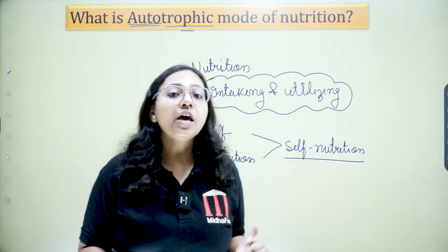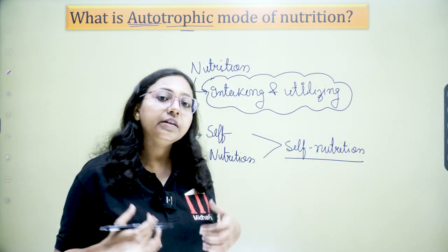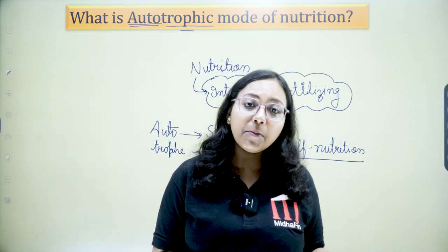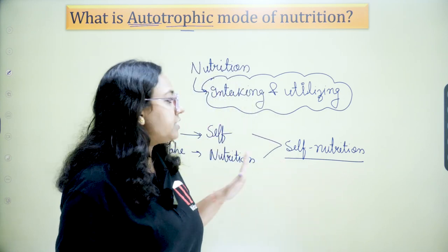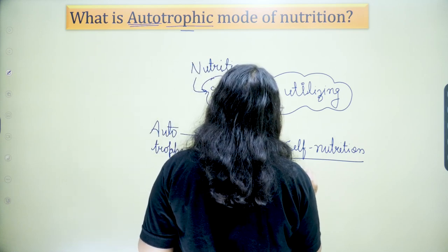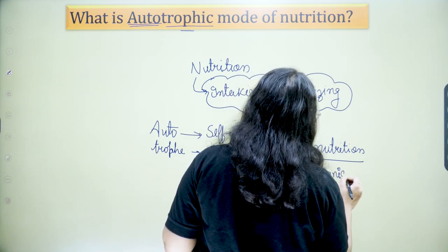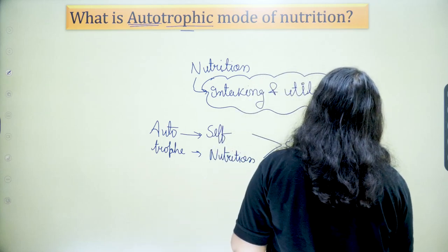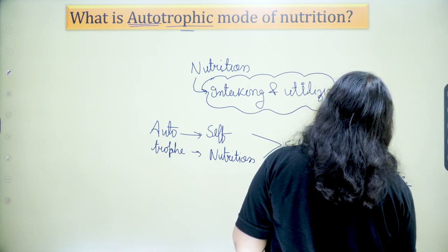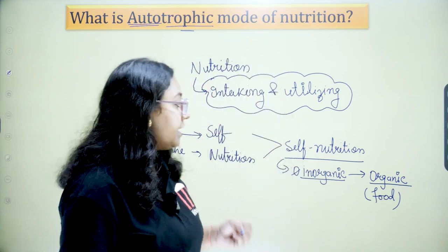Like human beings, we are completely dependent on plants or other animals for food — that is not self-nutrition, that is heterotrophic mode. But plants are able to make food by themselves — that is self-nutrition, or autotrophic mode. This self-nutrition can be done by using some inorganic substances to form organic things — the food which has been synthesized by plants.